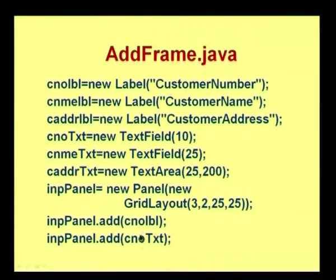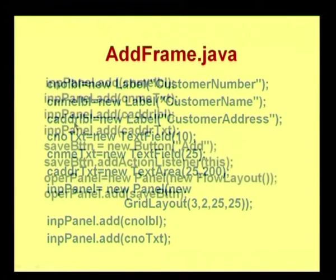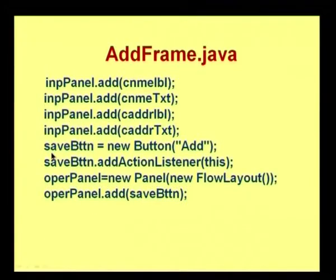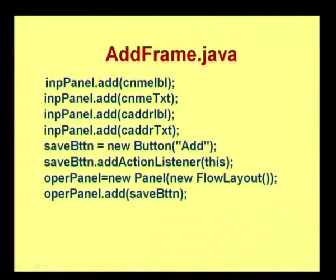In the constructor I call the base class JFrame constructor and create instances of customer number label, customer name label, and text fields. The address is specified as a TextArea. For the input panel I create a new panel with GridLayout of 3 rows and 2 columns with horizontal and vertical spacing of 25. I add all the labels and text fields. Then I create an instance of the save button and add the ActionListener to it.